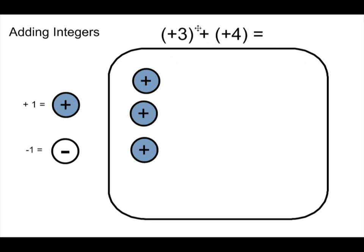Then the math tells me to add, right here it says add positive four. So I'm simply going to add four positive tiles to my workspace. I've got positive three together with positive four gives me of course positive seven. So positive three added together with positive four gives us seven.